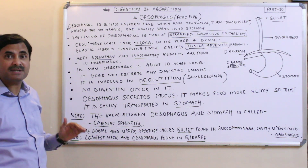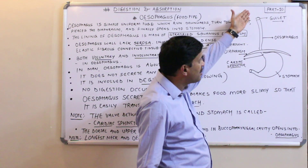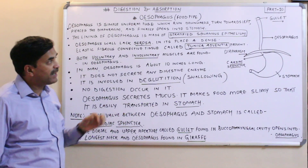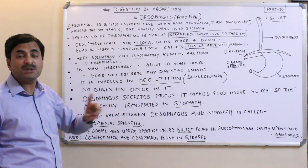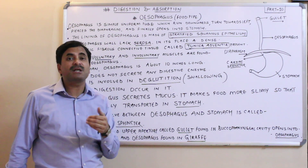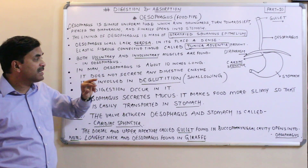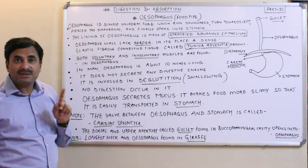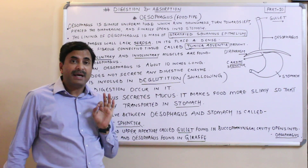The esophagus is a tube connecting the pharynx and the stomach. It is involved only in deglutition — the swallowing of food — and helps transport food towards the stomach.